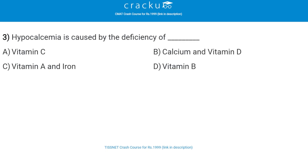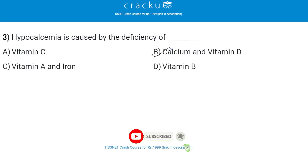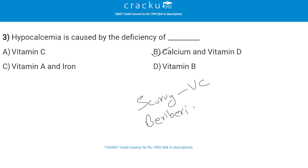Next, hypocalcemia is caused by the deficiency of — the correct answer is calcium and vitamin D, that is option B. Hypocalcemia is caused by the deficiency of calcium and vitamin D. Scurvy is caused by the deficiency of vitamin C. Beriberi is caused by the deficiency of vitamin B.